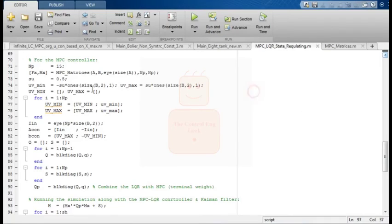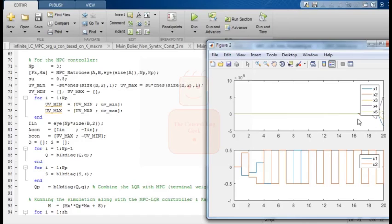The second run is with short horizon say three. Run the script again. Here the MPC was not able to stabilize the process with short horizon.